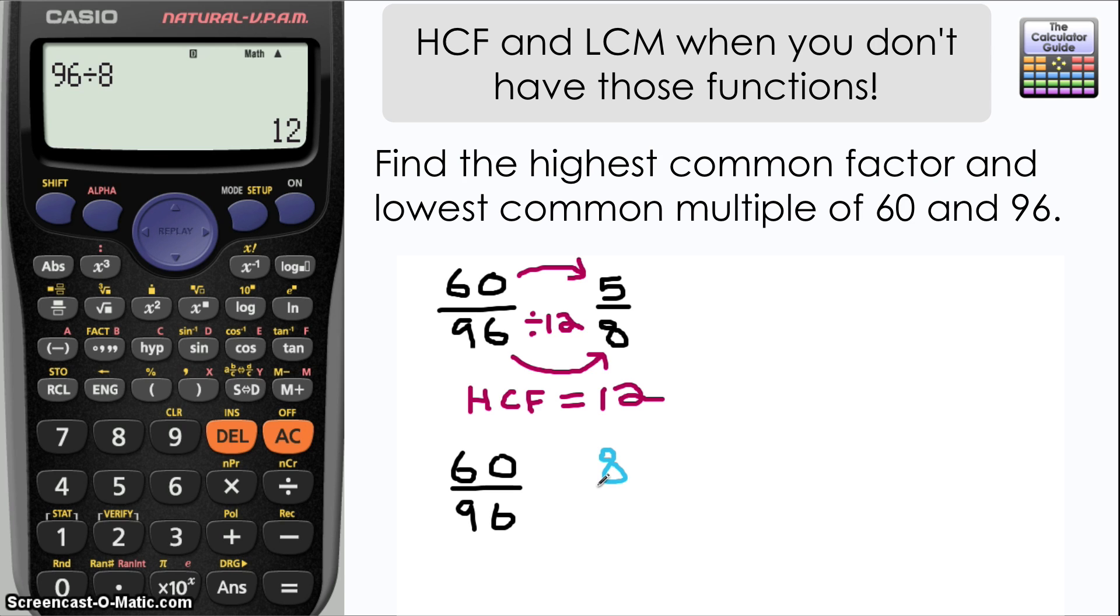If I compare the top of the fraction and the bottom of the fraction together, if I do 60 times 8 that will give me 480, and I'll also get the same number if I do 96 multiplied by 5, and that is in fact the lowest common multiple. So 480 is the least common multiple of 60 and 96.